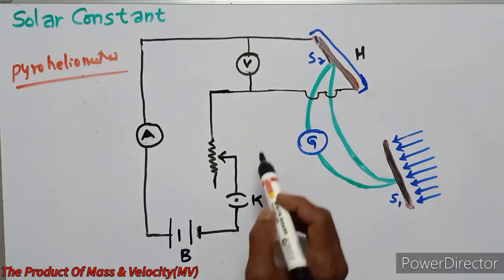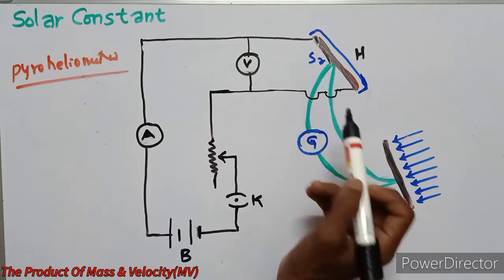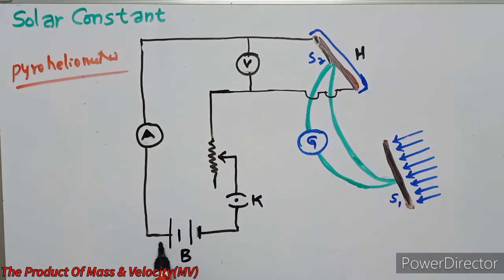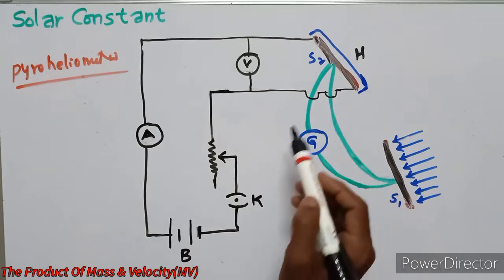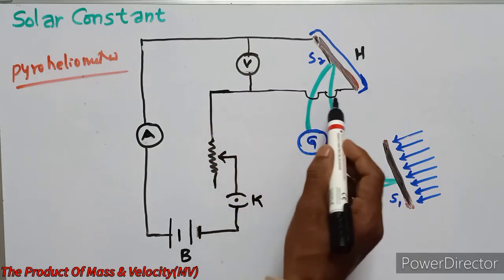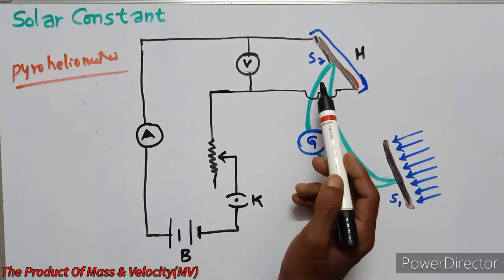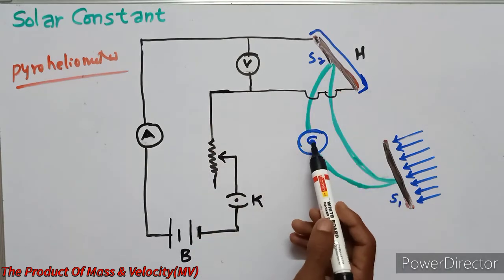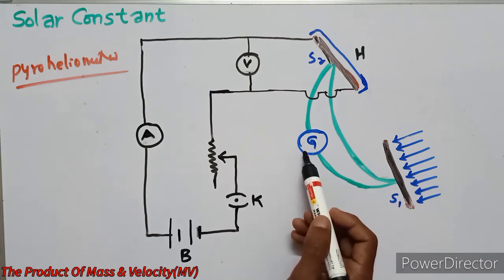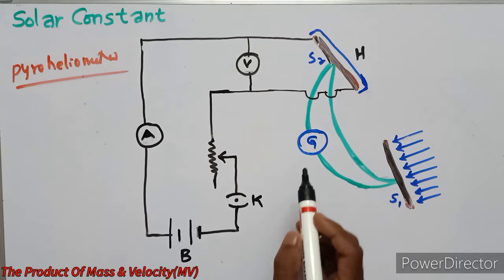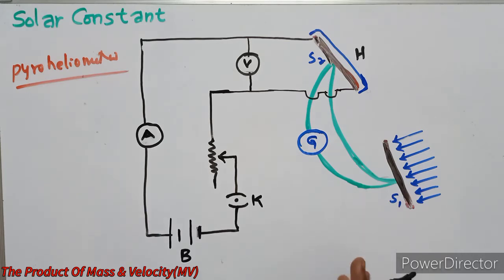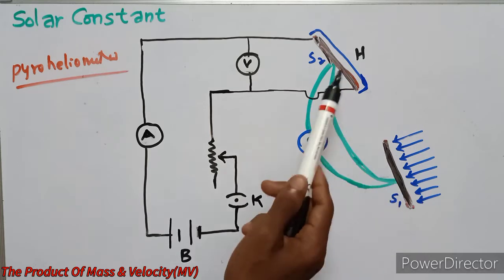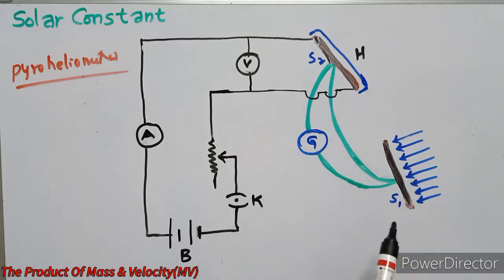Current is passed through the strip S2. S2 is connected to the circuit containing a battery, key, resistance, ammeter, and voltmeter. The current is passed through S2 until the deflection in the galvanometer becomes zero. Under these conditions, the temperatures of S1 and S2 are equal — this is the condition of thermal equilibrium.